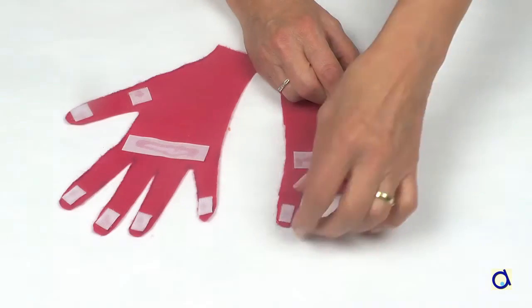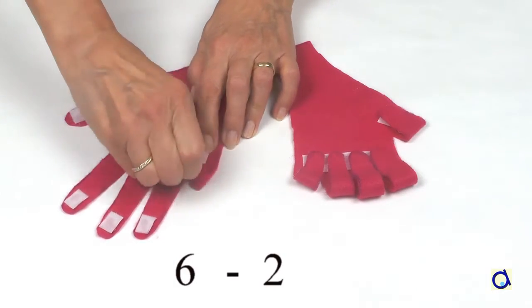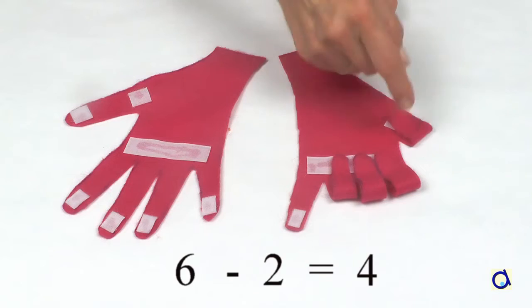To make a subtraction such as 6 minus 2, begin by folding 6 fingers and then unfold 2. There are 4 folded fingers left.